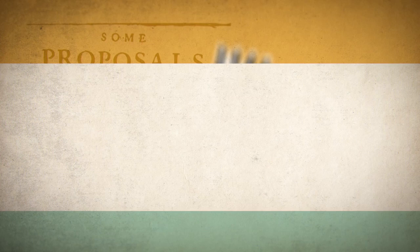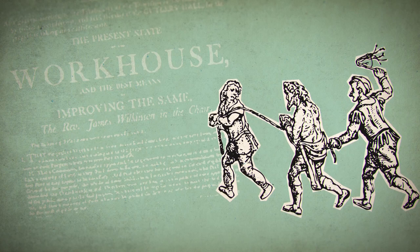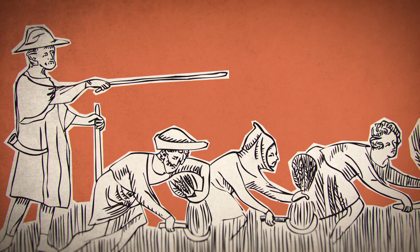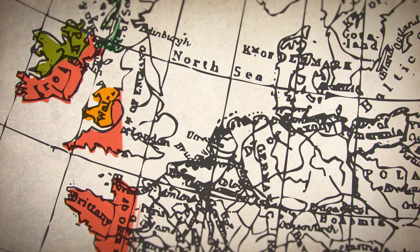Fearing revolt, the government eventually enacted a series of poor laws. The first such law, in 1536, was called an Act for the Punishment of Sturdy Vagabonds and Beggars. Most of the time, the unemployed were forced back to their home parish and put to work in the workhouse. Families were broken up, and children were apprenticed off to farmers and other employers.